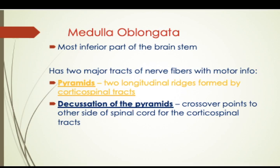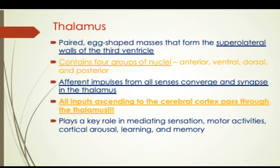The medulla oblongata is the most inferior part of the brain stem. It has two major tracts: one is called the pyramid, which consists of two longitudinal ridges, and the other is the decussation of the pyramids — the crossover point to the other side of the spinal cord for the corticospinal tract. The thalamus is a paired egg-shaped mass that forms the superolateral walls of the third ventricle. It contains four groups of nuclei: the anterior, the ventral, the dorsal, and the posterior. All inputs ascending to the cerebral cortex pass through the thalamus, and the thalamus plays a dominant role in motor activities, learning, and memory.